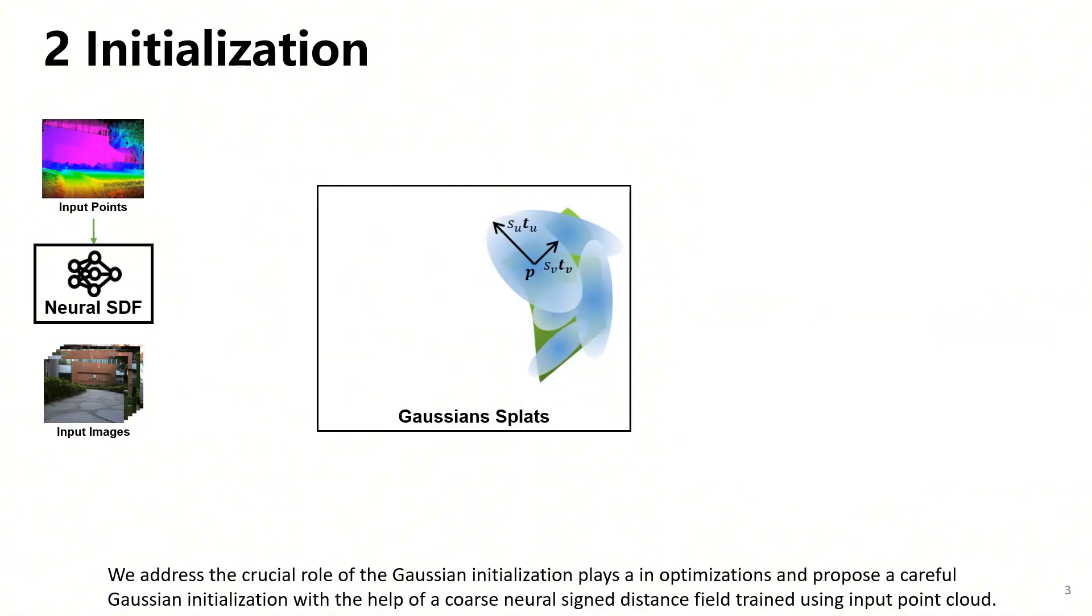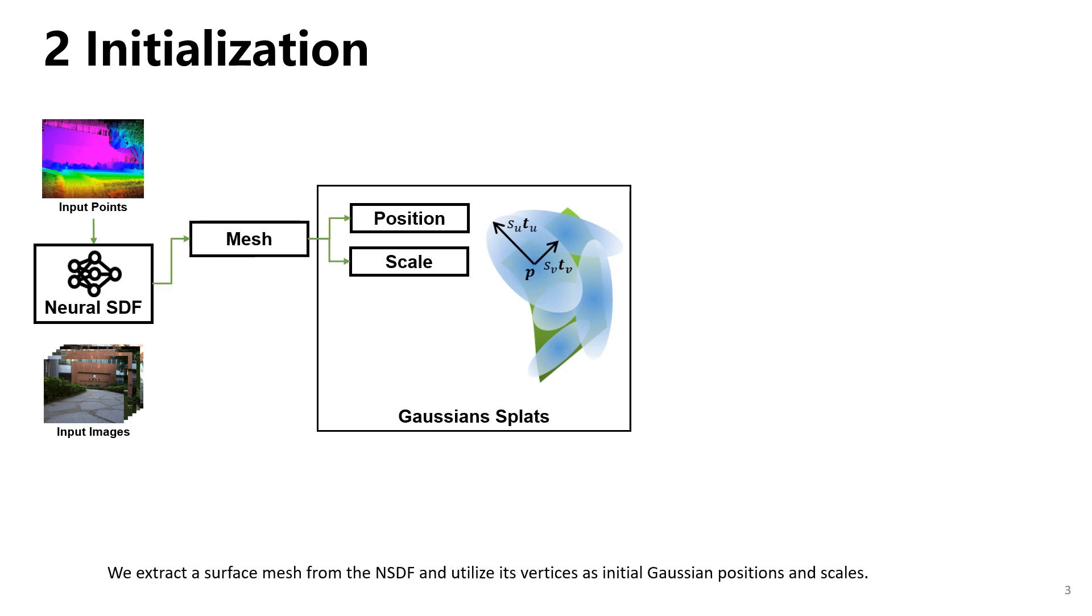We address the crucial role of Gaussian initialization placement and optimization and propose a careful Gaussian initialization with the help of a coarse neural signed distance field trained using input point cloud. We extract a surface mesh from the NSDF and utilize its vertices as initial Gaussian positions and scales.